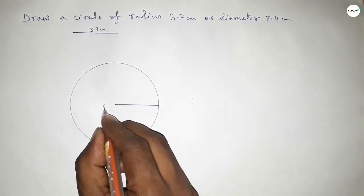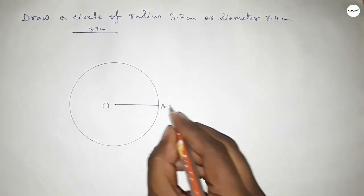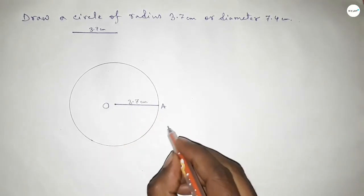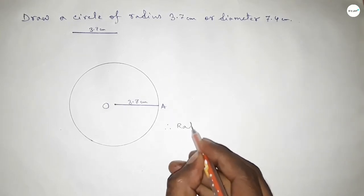So taking here the center O and here a point A, so OA equal to 3.7 centimeter. Therefore the radius OA equal to 3.7 centimeter.